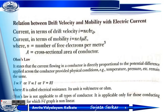What is Ohm's law? It states that the current flowing through a conductor is directly proportional to the potential difference applied across the conductor. This is denoted as I proportional to V, or V proportional to I, giving us V equals RI, where R is the resistance of the conductor, or electrical resistance. The unit is Ohm.